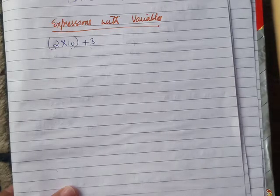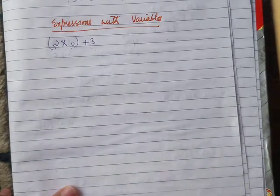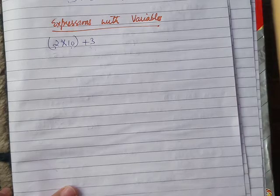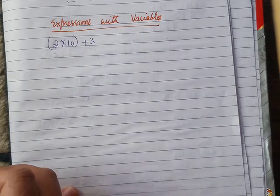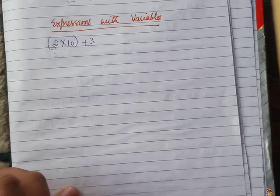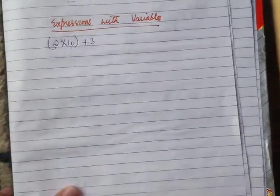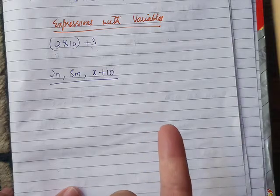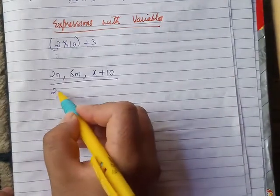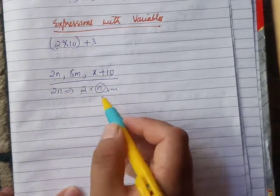There are number operations like plus, minus, into, divide. That's an expression. When we have numbers like 2n, 5m, x+10, it's an expression. With variables, variables means we don't have a fixed value. We use letters from A to Z. For example, 2n, 5m, x+10 - these are expressions. These have variables. Two numbers - n is a variable.